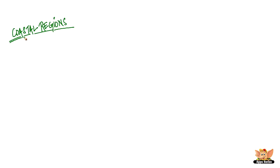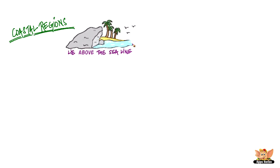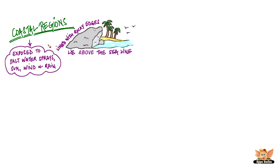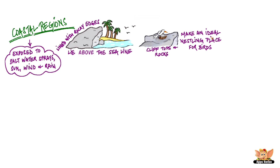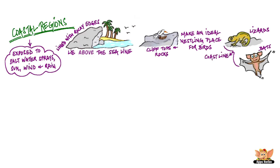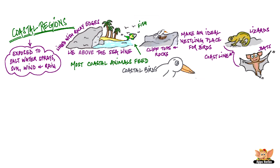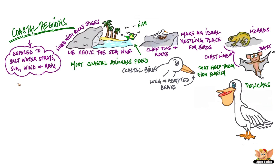Coastal regions lie above the water line and are mostly lined with rocky edges that face the sea. They are more exposed to salt water spray, sun, wind and rain. Clifftops and rocks make an ideal nestling place for birds. Many species of lizards and bats are also found along the coastline. Most animals from this region feed on fish from the sea. So coastal birds have long and adapted beaks that help them fish easily. Some birds like pelicans have throat pouches that they can dip in to catch fish.